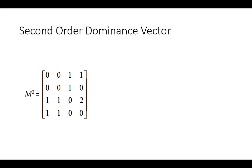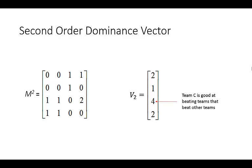Now, a second order dominance vector. Very simple, we just sum the elements in each row again. And you can see the 4 for team C means team C is very good at beating teams that beat other teams. So that's what that 4 represents in the second order dominance vector.